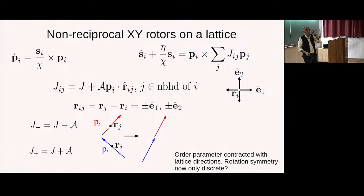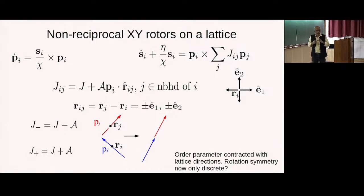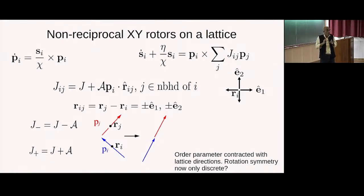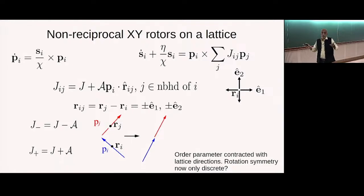You might imagine that because you're contracting the order parameter with lattice directions, you're going to spoil isotropy — the effective dynamics would have only the rotation symmetry of the lattice, not the full rotation symmetry of the original order parameter space. So let's first check that this is not the case, because we want to study a non-reciprocal XY model while retaining full O(2) rotation invariance. This rule seems to have spoiled it — and once you introduce fourfold anisotropy it's just a four-state clock model, which is not so interesting.